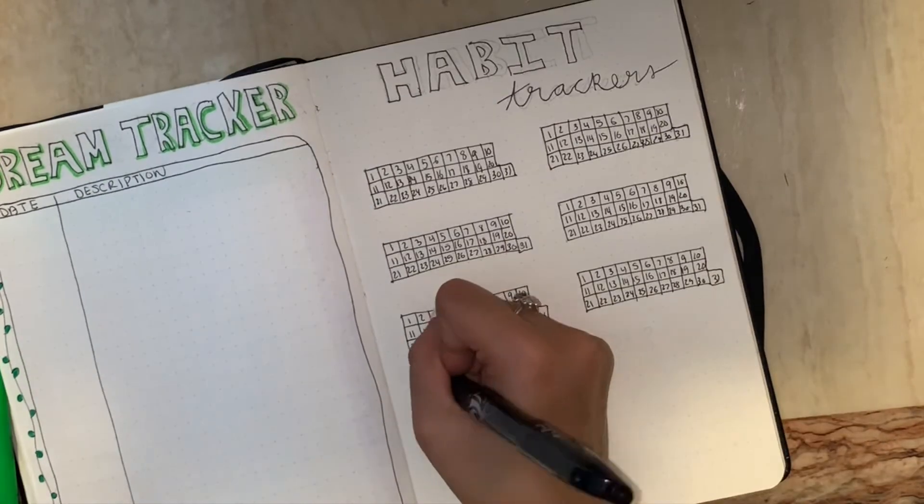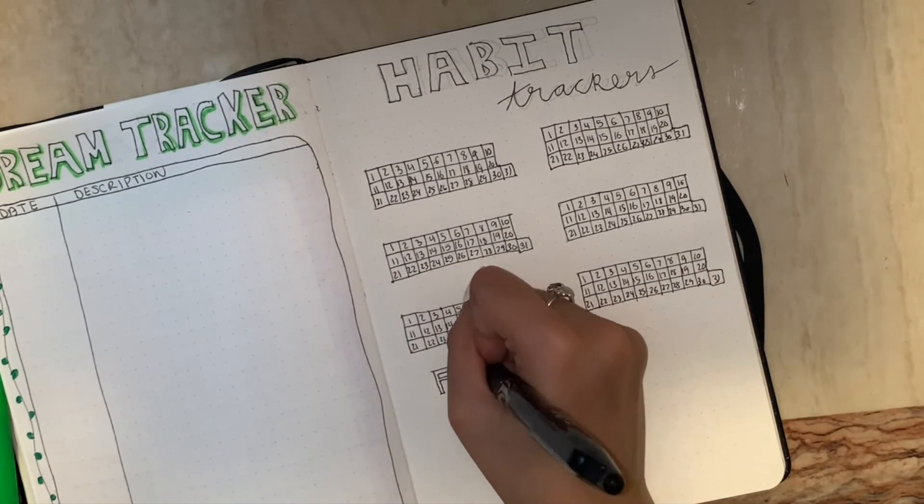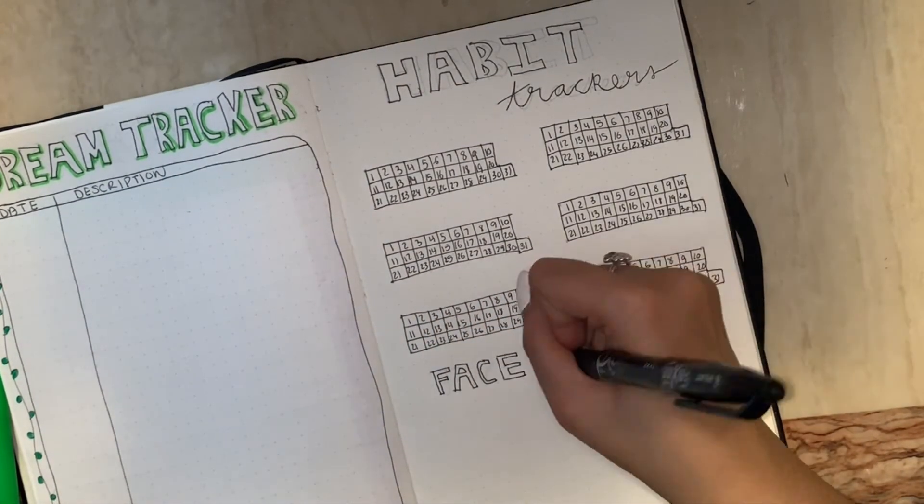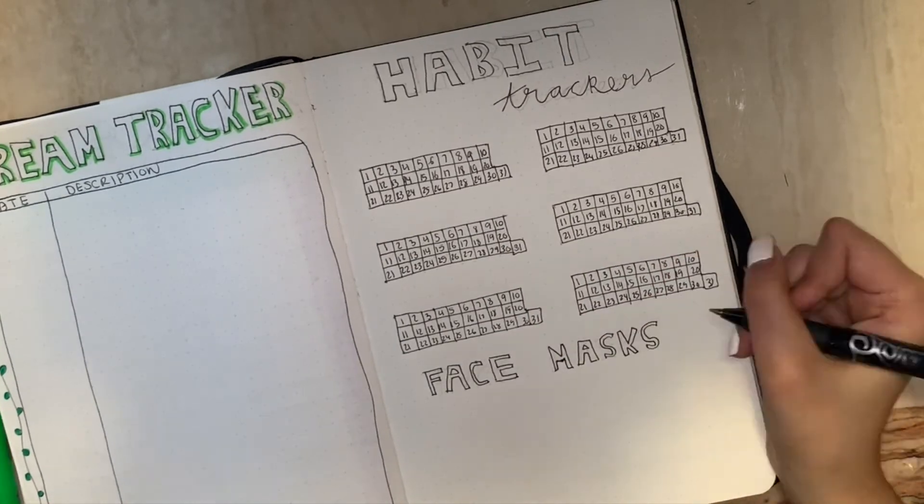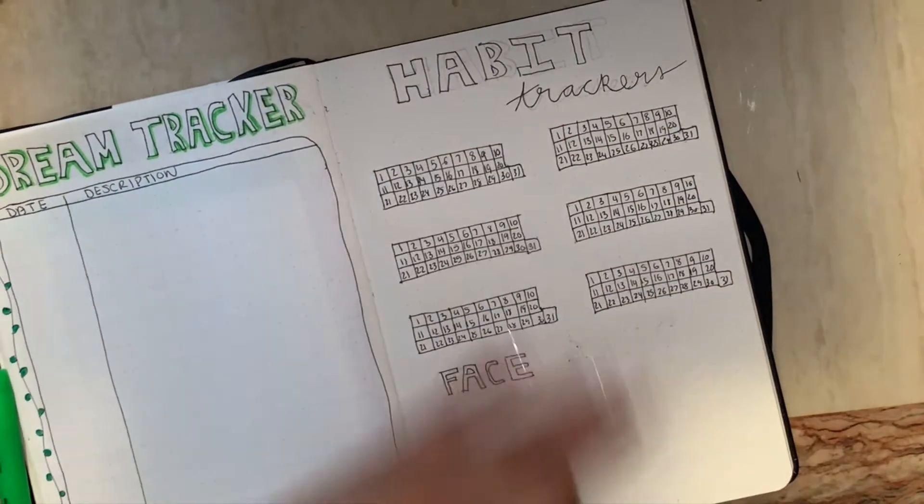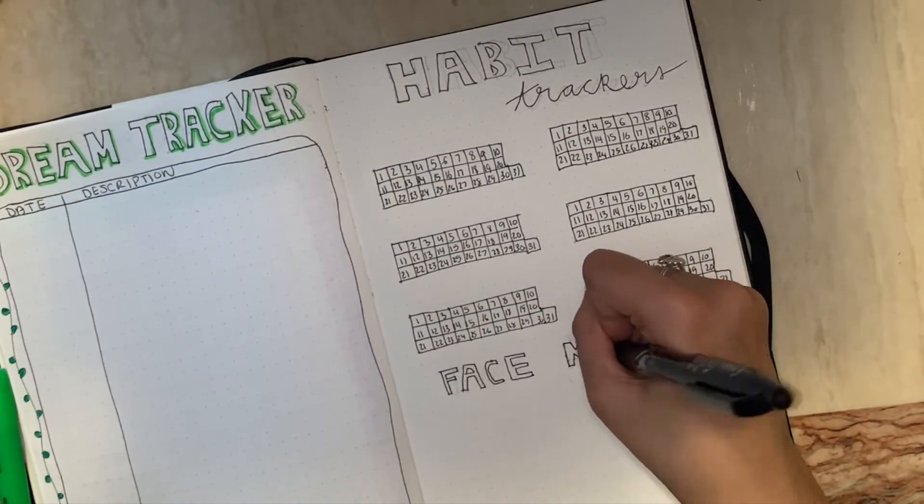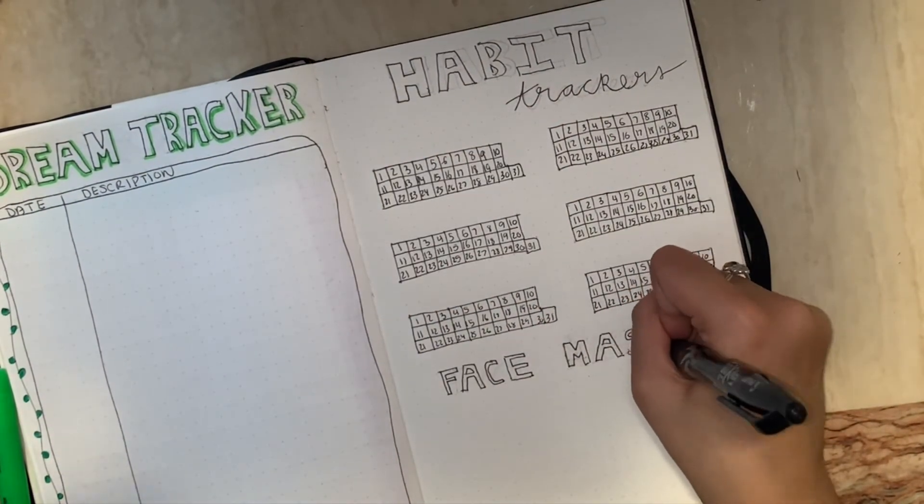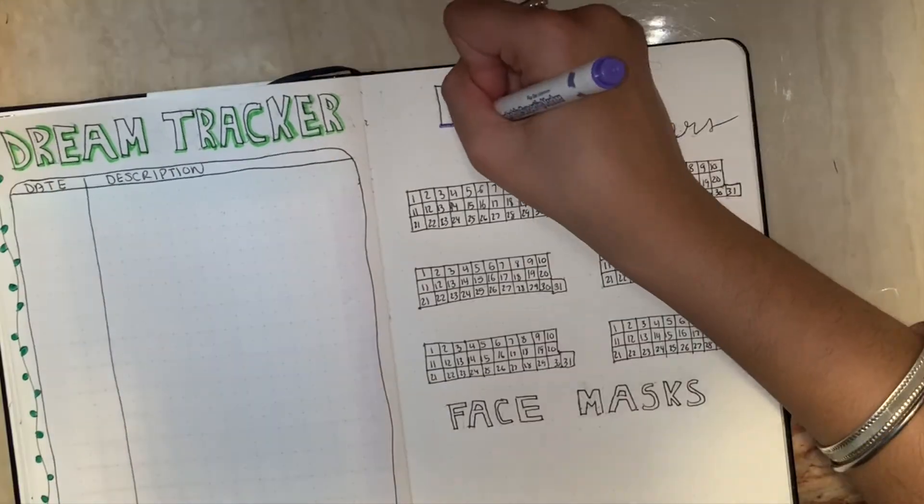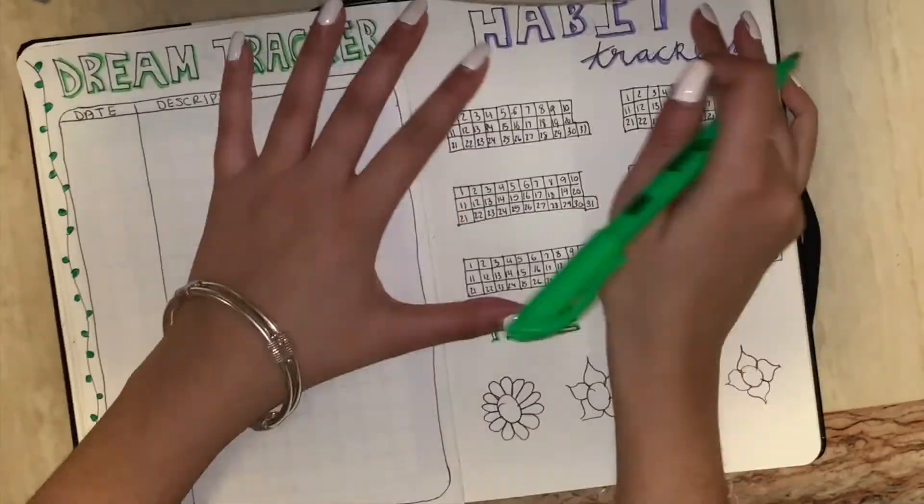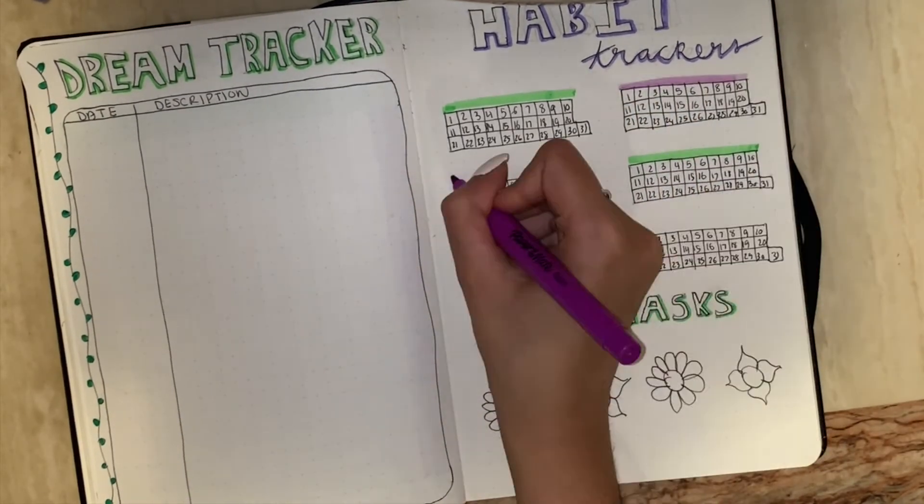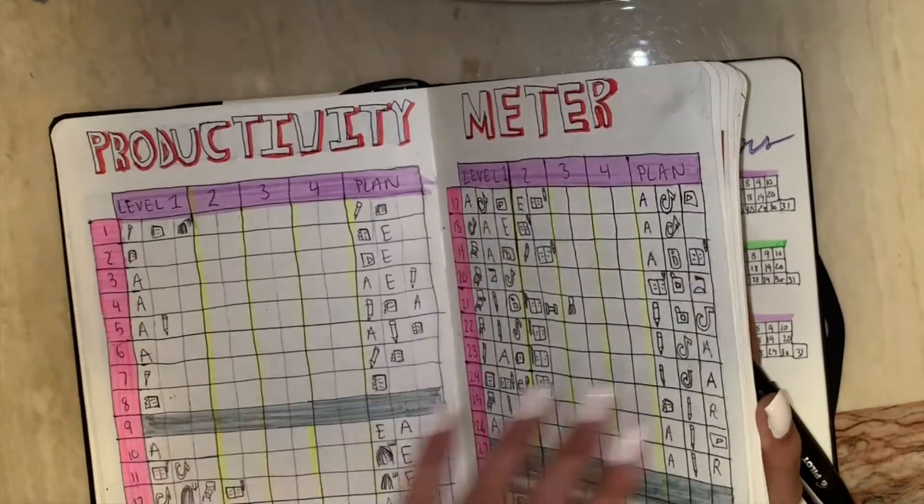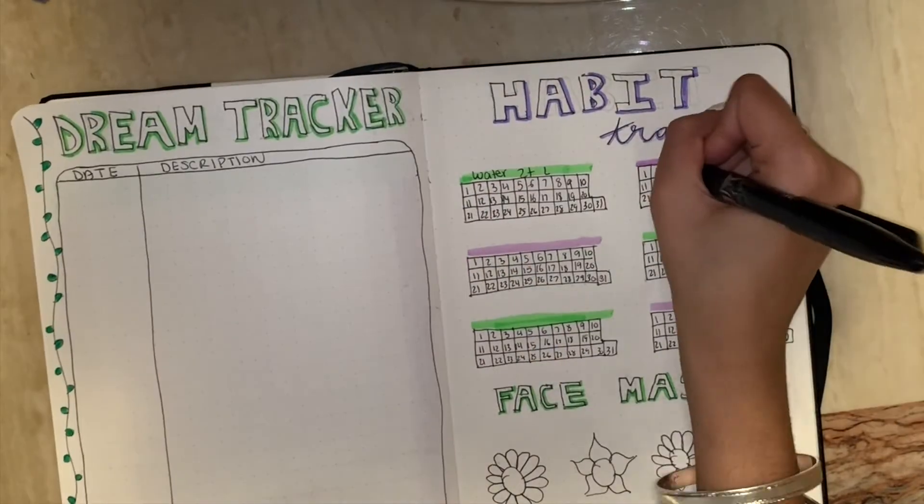Next I'm adding my face mask tracker because I'm trying to do 1 face mask per week, so that means 4 a month. I'm just using my habit trackers to track it. So this month I decided to draw 4 flowers and I'll color each one in. Then I also went in and added purple drop shadow to the habit tracker and then added green and purple highlights to each tracker.